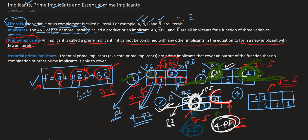Now let us talk about the fourth example. Is this my prime implicant? No, because I can combine it with this one. Now, is this a prime implicant? Yes, because I cannot combine this big red implicant with any other implicant to get fewer literals — so this is my prime implicant. Similarly, this would be a prime implicant because I cannot further combine it. Similarly, these ones and this one would also be prime implicants.